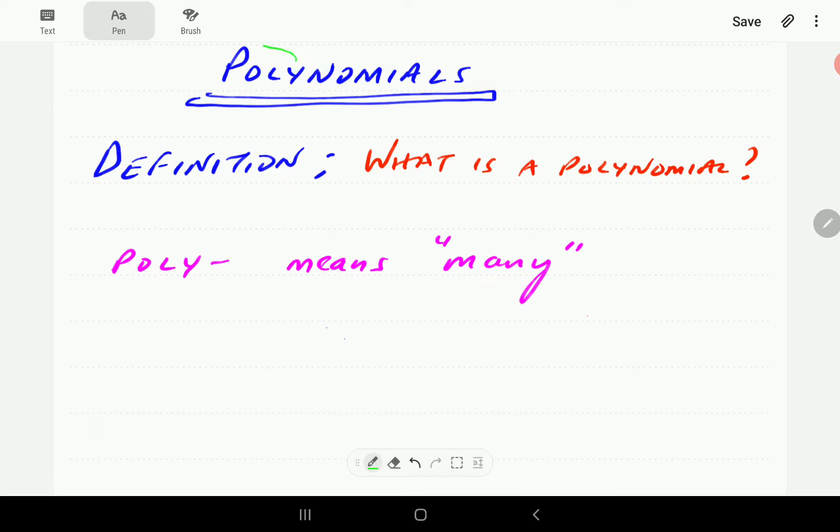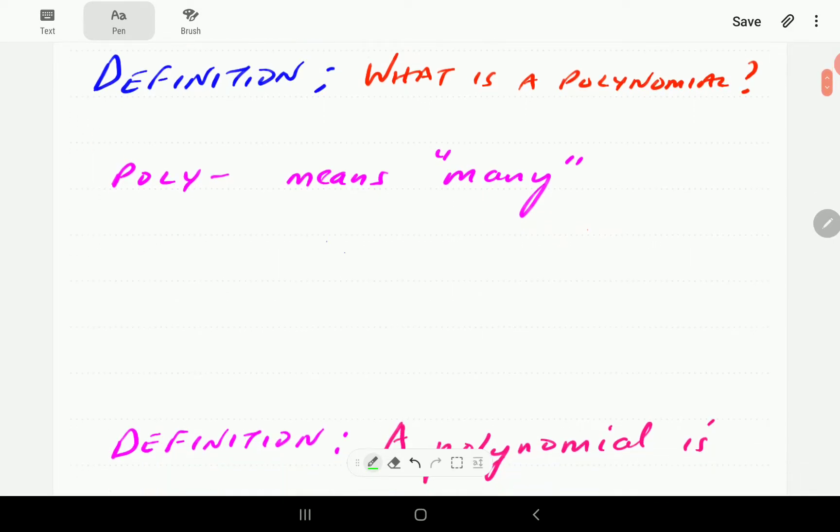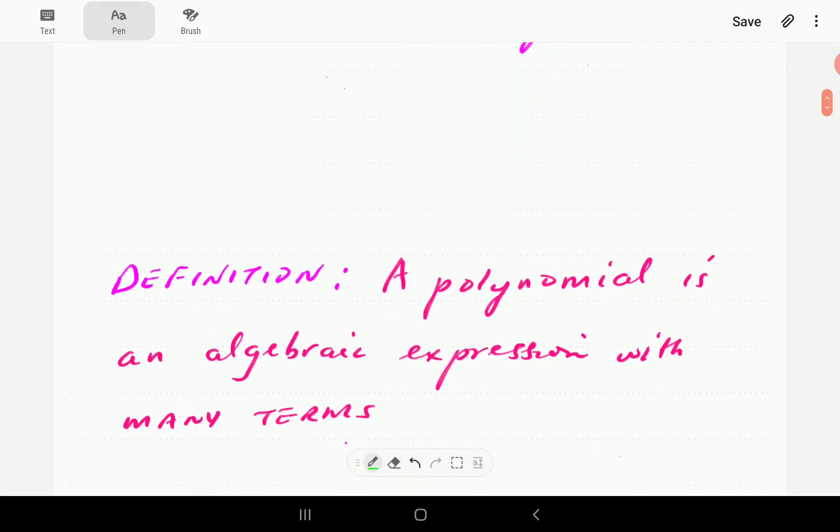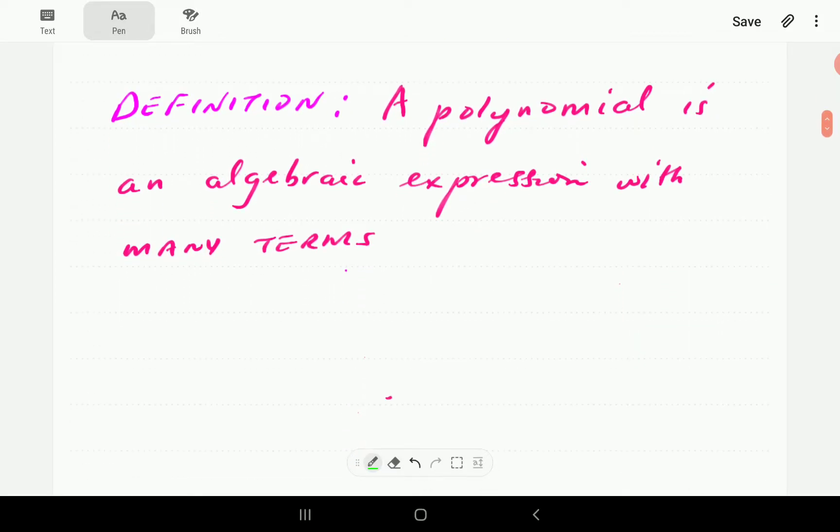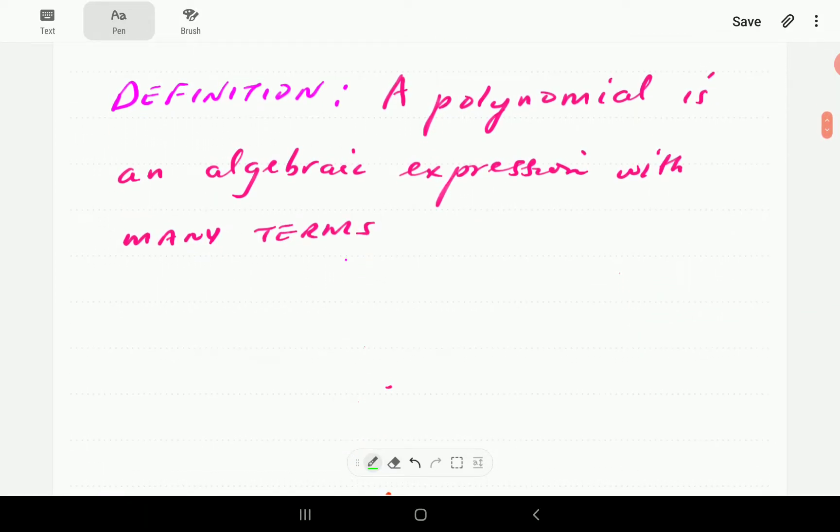Okay, so the first thing to note is the prefix poly stands for, or means, many. So from this prefix, it makes logical sense to expect that a polynomial could be defined perhaps as follows.